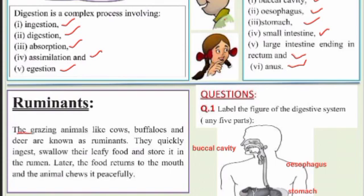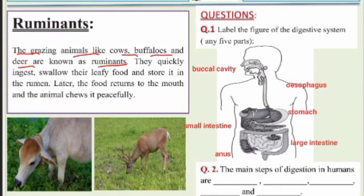Ruminants — the grazing animals like cow, buffalo, and deer — are known as ruminants because they eat grass. They quickly ingest their leafy food, storing it, and later the food returns to the mouth where the animal chews it again.